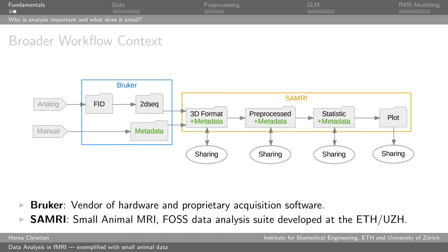Starting from the NIfTI data, we need to preprocess it — taking care of known artifacts that might confound our analysis. Once cleaned, we compute a statistic: we summarize this high-dimensional data in a lower-dimensional representation that gives us information about uncertainty in the statements we're trying to make. Once we have that, we have plots. Ideally, we can share data at each of these points in order to collaborate and have it reviewed.